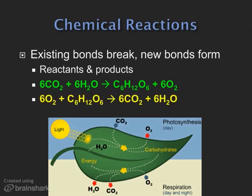Respiration goes on day and night. Respiration uses the glucose that was produced by photosynthesis to produce energy needed to build new cells, and then it produces water and carbon dioxide, as you see in the two formulas shown here in yellow. Respiration is the process that all living things do. Photosynthesis — just plants.